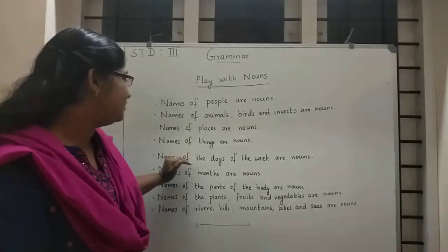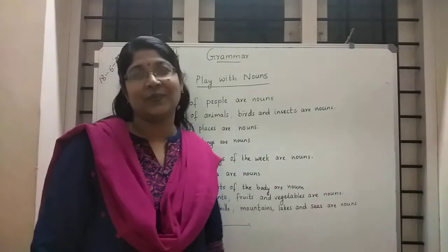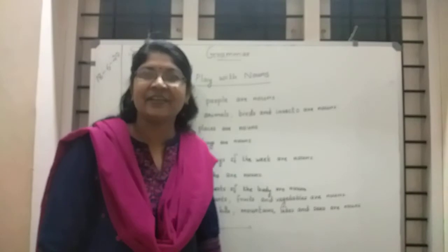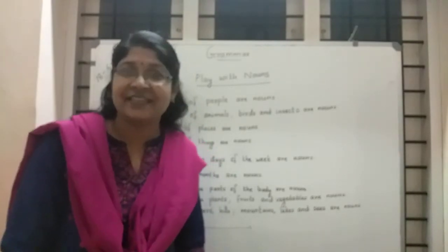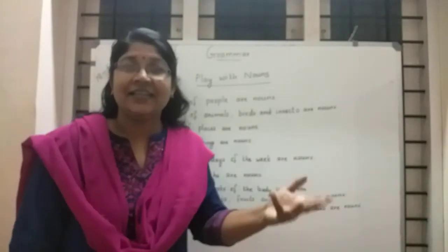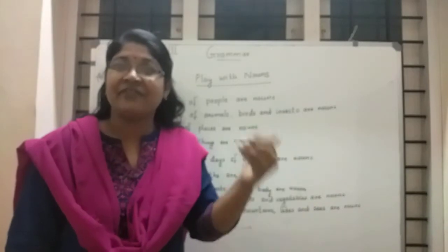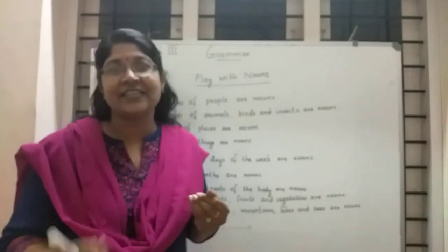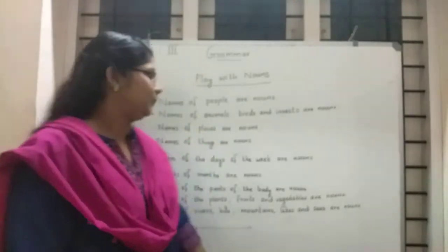Names of days are also noun. How many days are there in a week? There are seven days: Sunday, Monday, Tuesday, Wednesday, Thursday, Friday, Saturday. They are also noun.